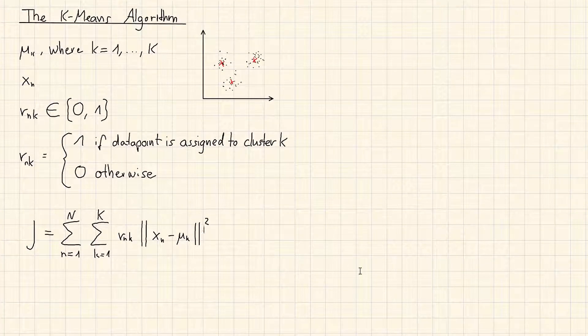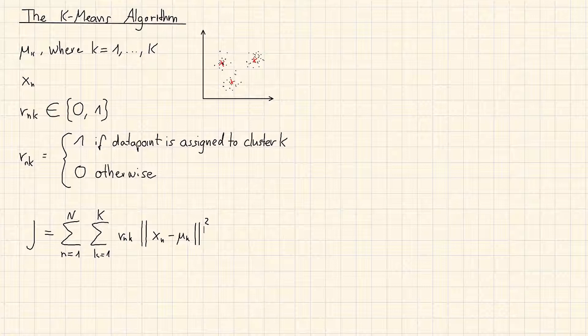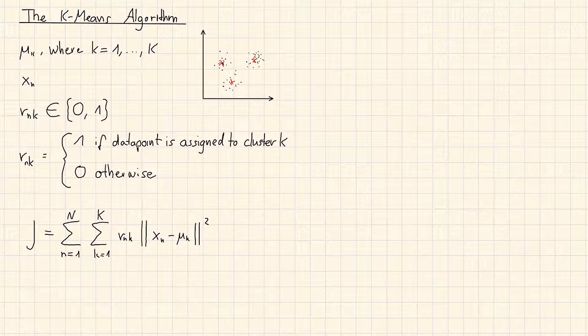Our goal is to find values for rnk and µk to minimize J. Remember, in the last section we discovered that we can do this iteratively with two successive steps which optimize the µk.